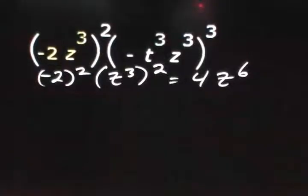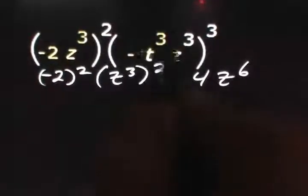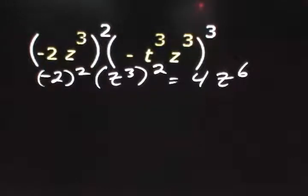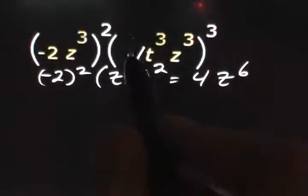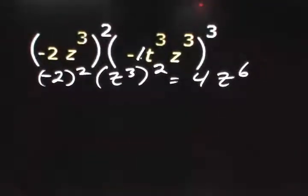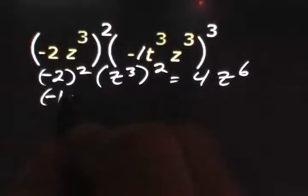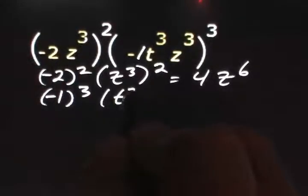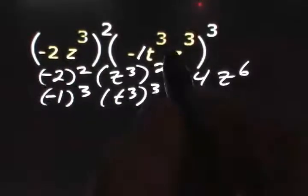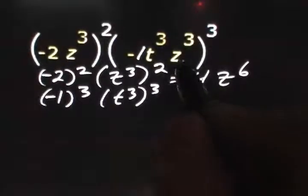For the second monomial, negative t to the third, z to the third, the coefficient of this monomial is negative 1. If we don't have a number in front of the variable, we can just put a 1 there. So now we take negative 1 and raise it to the third power. We take t to the third and raise that to the third power as well, and then finally z to the third raised to the third.